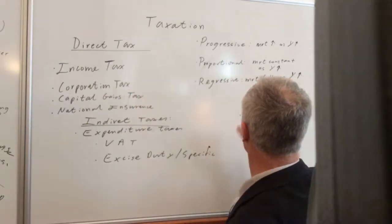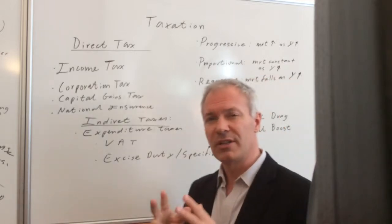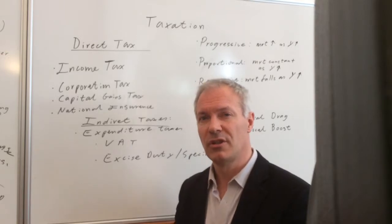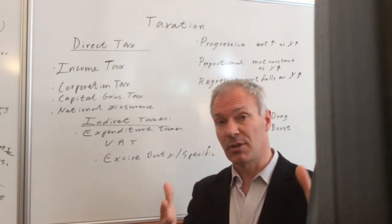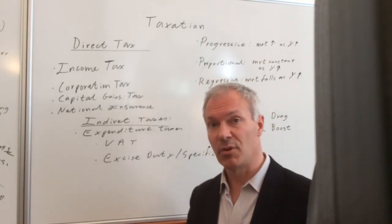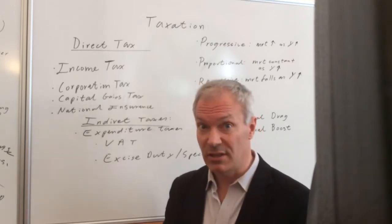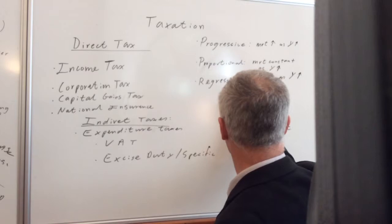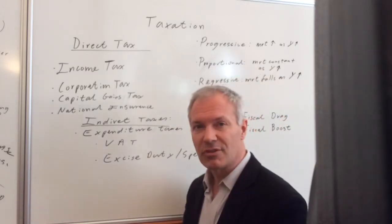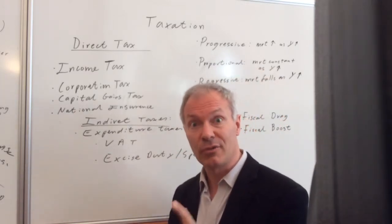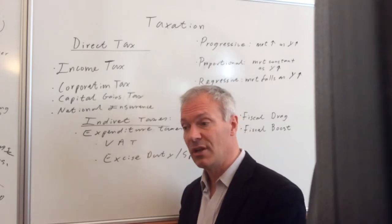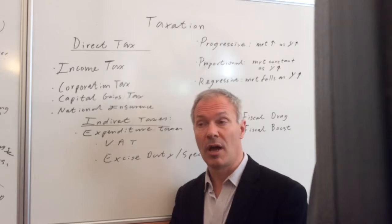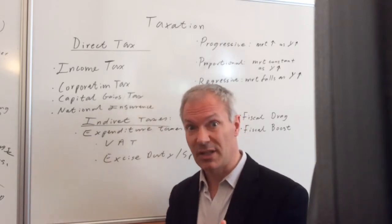A proportional tax is one where the marginal rate of tax stays constant as your income goes up — the same percentage on everything, so as your income goes up you pay proportionately the same amount of tax. Regressive taxes are where the marginal rate of tax falls as your income increases, so as you become richer your income goes up but you pay a lower proportion of your income in tax.